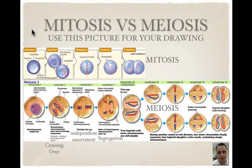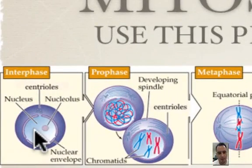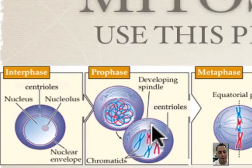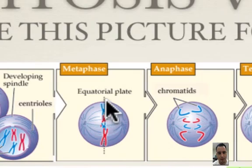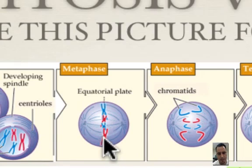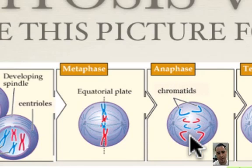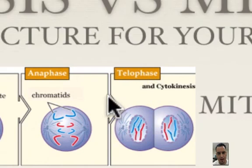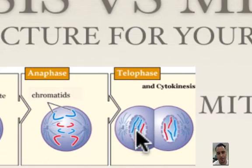Now we're at mitosis versus meiosis — use this picture for your drawing. Here we have interphase; you can't really see the chromosomes since they're in chromatin form. As prophase starts, the chromatin condenses and now we see chromosomes. The nuclear membrane also disappears so that the spindle fibers can come in and attach to the chromosomes. In metaphase, they line up on the equatorial plate — in the middle — single file. That's important because we want to split them evenly. In anaphase, the chromatids separate and go to opposite sides.